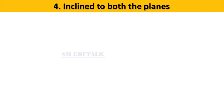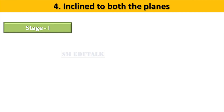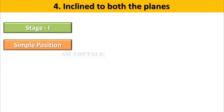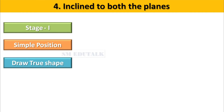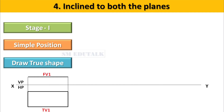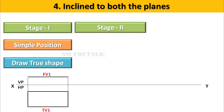As I said, if you get a question from this position, you have to draw the projections in three stages. In stage 1, draw the plane in simple position. When the object is in simple position, the view which shows the true shape should be drawn first. For example, now you are seeing the front view and top view of a rectangular lamina. Top view has got the true shape. So top view should be drawn first followed by front view. Once front view and top view have finished in stage 1, then we enter into stage 2.